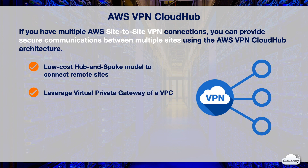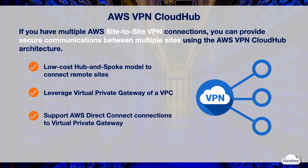CloudHub leverages the virtual private gateway of a single VPC and dynamically routed site-to-site VPN connections from the customer gateway of each remote site to the common virtual private gateway. These remote sites must not have overlapping IP addresses. Sites that use AWS Direct Connect connections to the virtual private gateway are also supported by CloudHub.